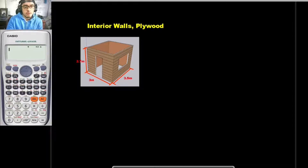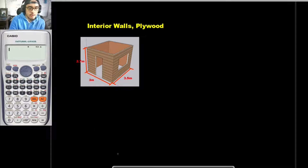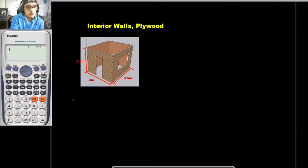For our interior walls, it is said in the specifications that we are to use plywood as our interior wall materials. We would be fastening our plywoods to our wall studs. So for us to solve for the number of plywoods needed for the interior walls, the first thing we should do is to compute for the total area of the wall.